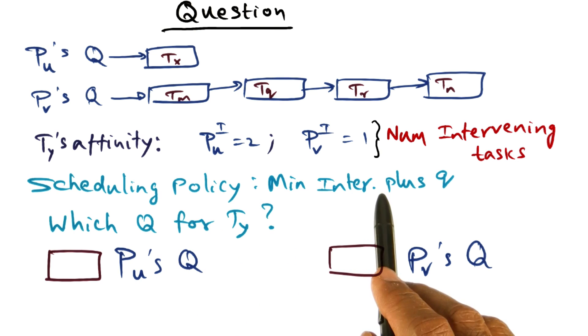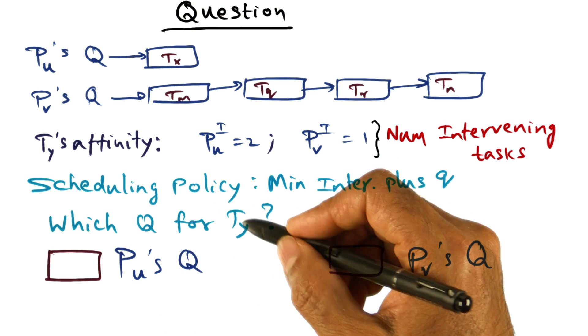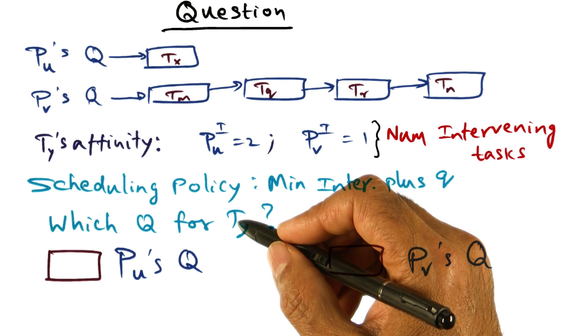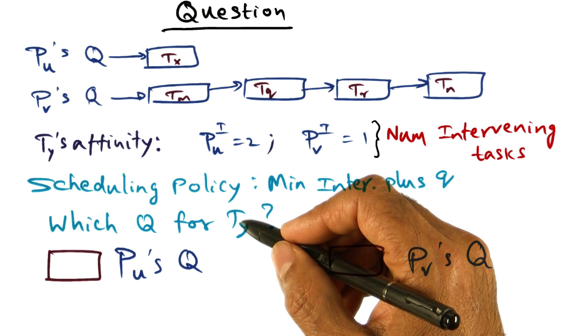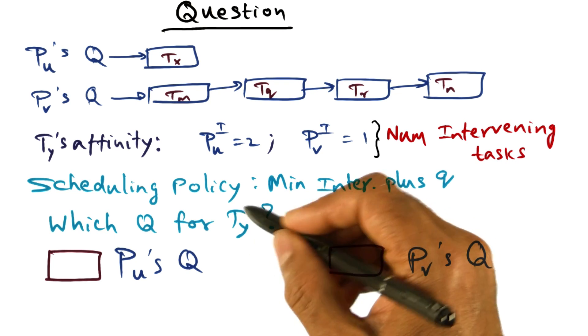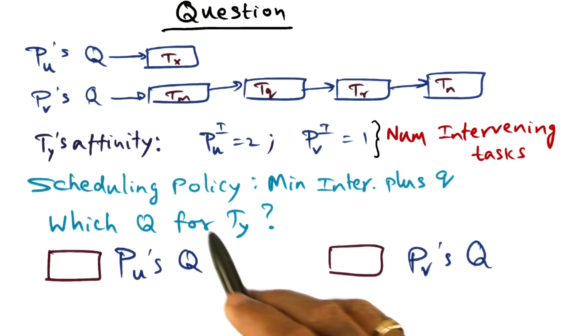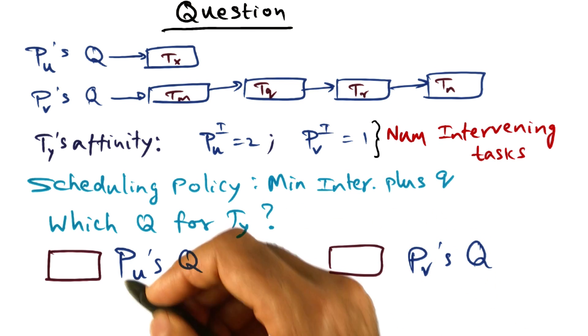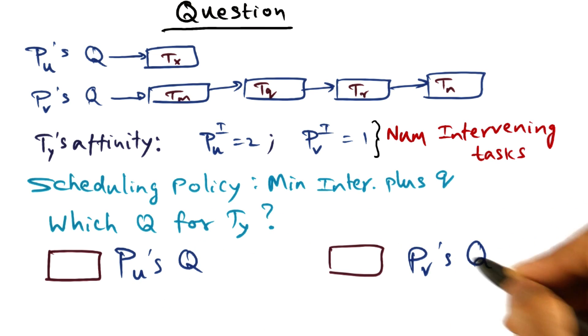So given that this is the scheduling policy, when we decide at the point that T_y gets to run again, when it is ready to be put on a Q, which Q will I put T_y on if the scheduling policy is minimum intervening plus Q? Is it P_u's Q or is it P_v's Q?